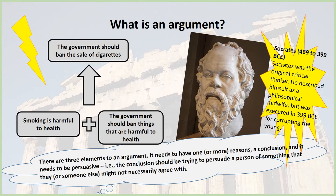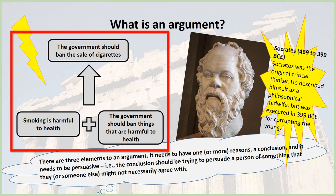Looking at our example slide again, we can see it's full of things that are increasing the amount of extraneous processing students need to do. There's way too much going on — the music track itself is a distraction on the auditory channel. On the visual channel, there are multiple distractions. The key element is actually the diagram, which is potentially quite useful as it sets out in diagrammatic form what an argument can look like. However, it's not clear that's what students should focus on, because there's so much else going on — including the bust of Socrates, the pixelated picture of the Parthenon, and an entirely irrelevant seductive fact about Socrates.